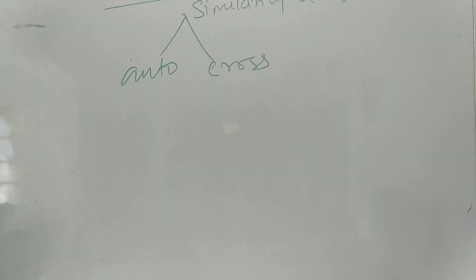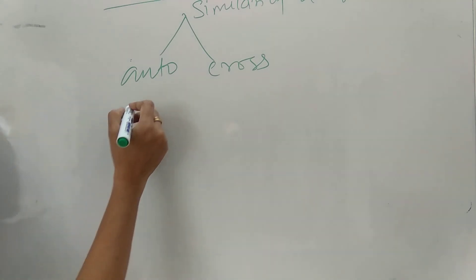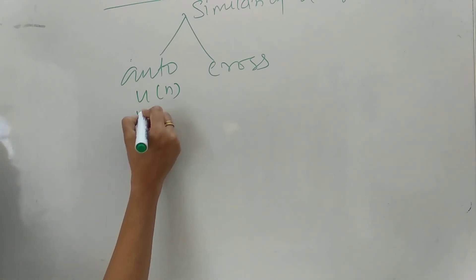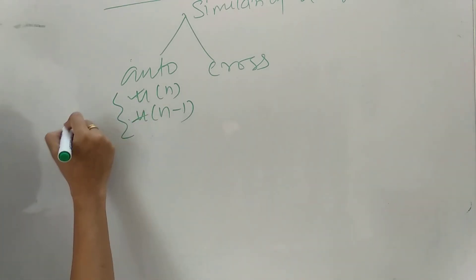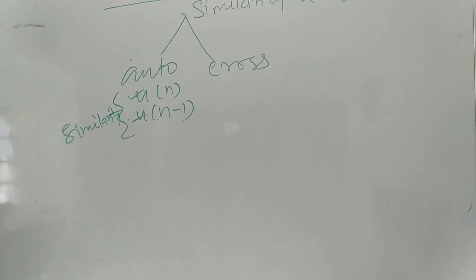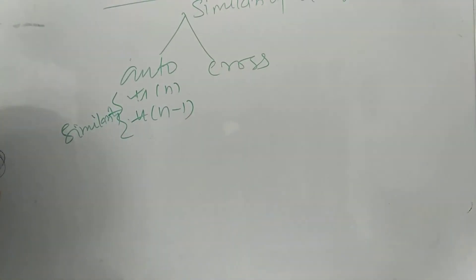There are two types of correlation: auto-correlation and cross-correlation. Auto-correlation means the similarity of a signal with a shifted version of itself. We say we have signal U of N and a shifted version of U of N, and the similarity between the original signal and its time-shifted version is what we call auto-correlation.